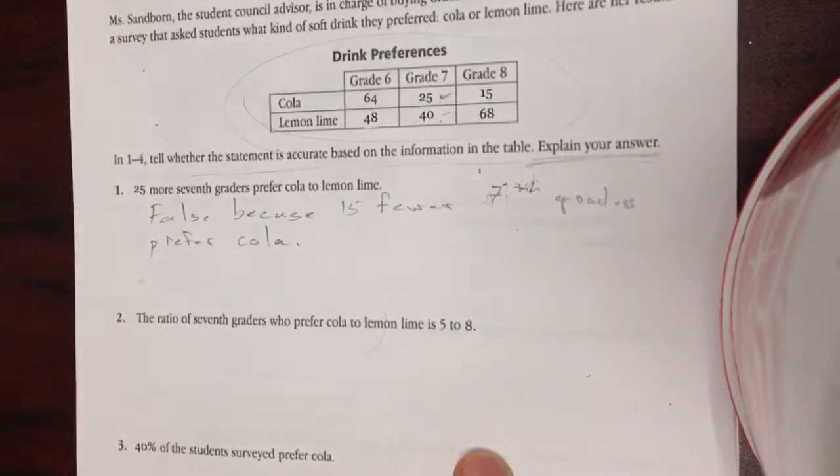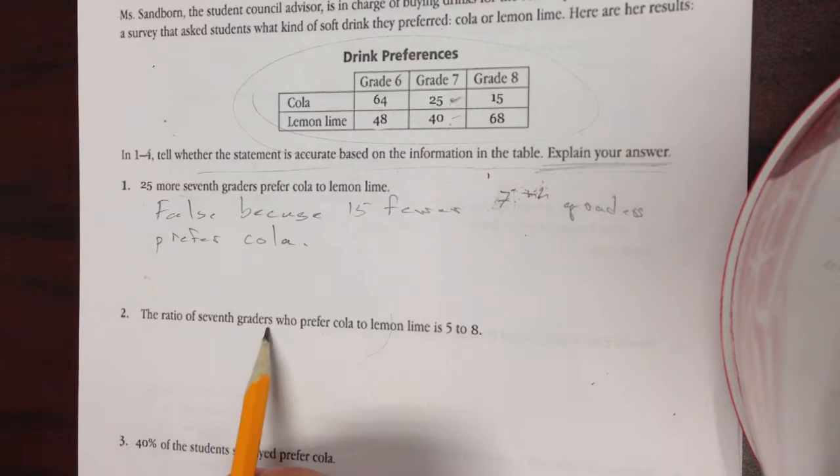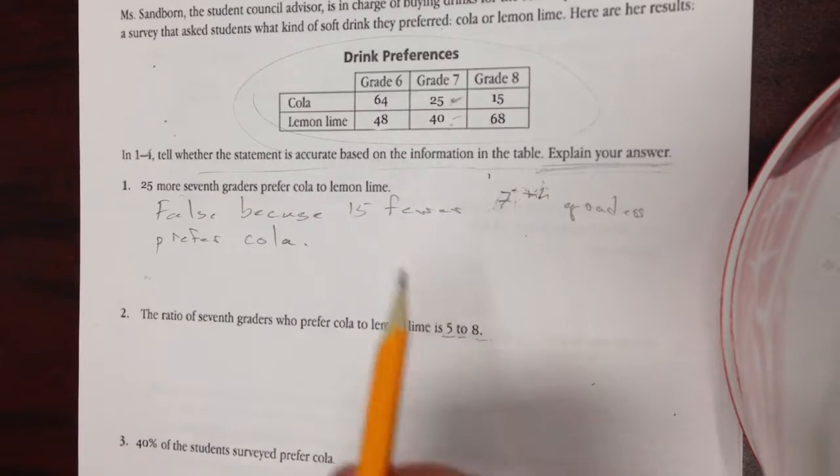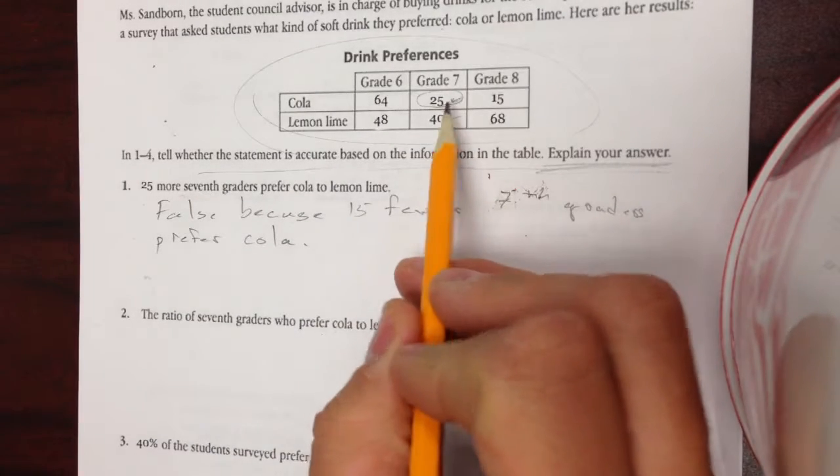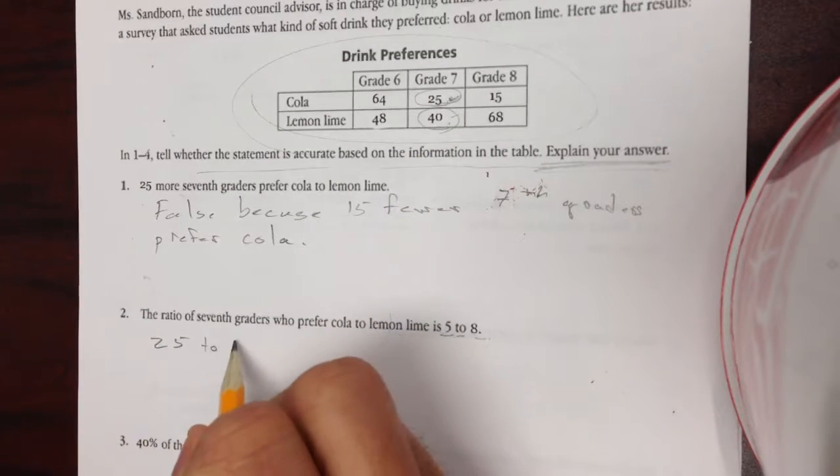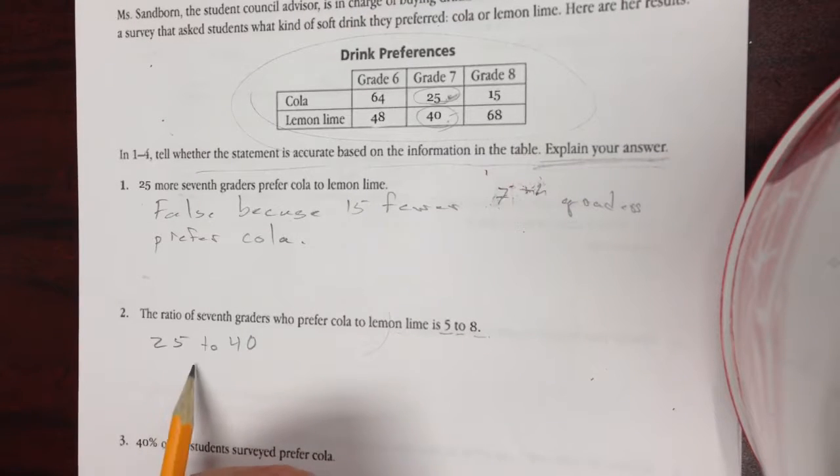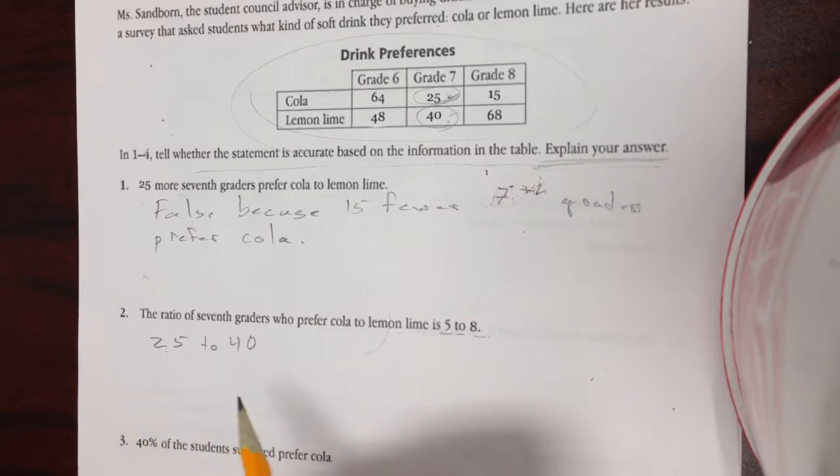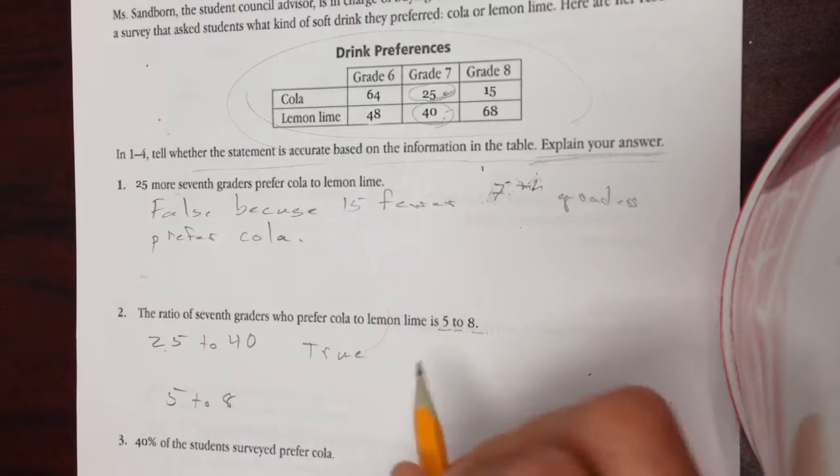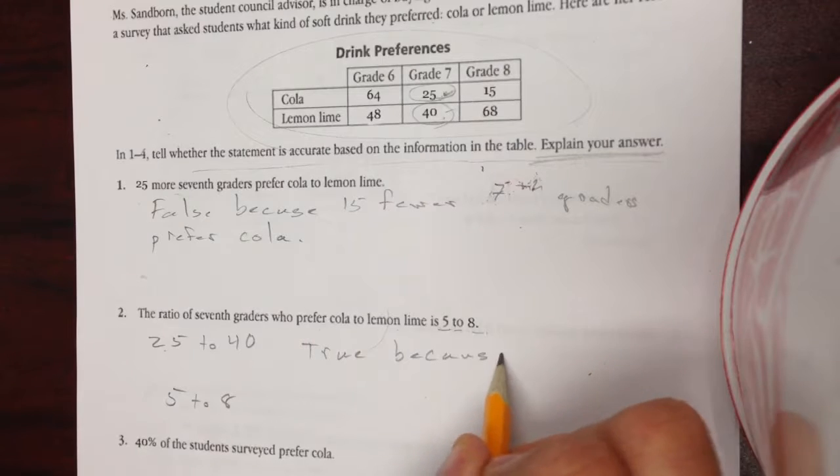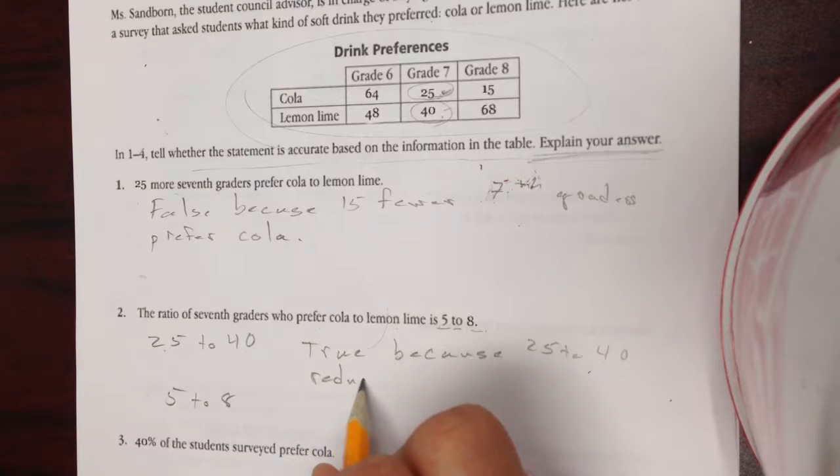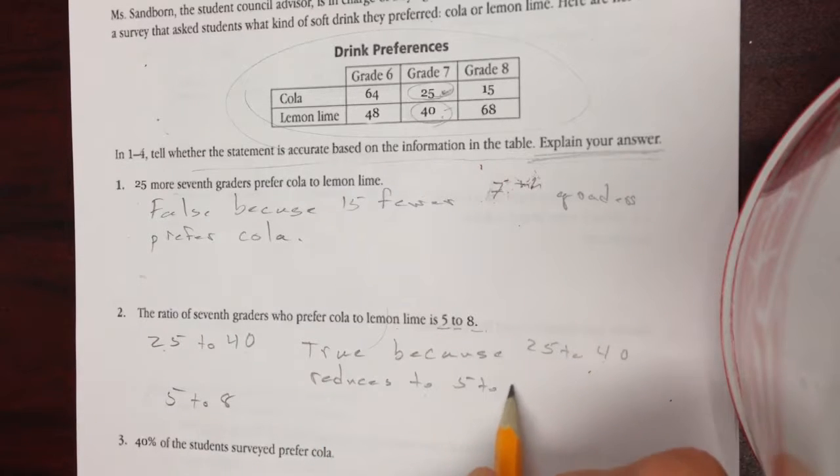Okay, looking at the next question, the ratio of 7th graders who prefer cola to lemon lime is 5 to 8. Now 7th graders prefer cola to lemon lime, so 25 to 40. And that reduces, what number goes into 25 and 40? 5 does, 5 to 8. So it is true because 25 to 40 reduces to 5 to 8.